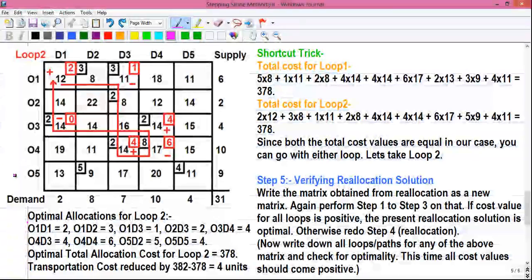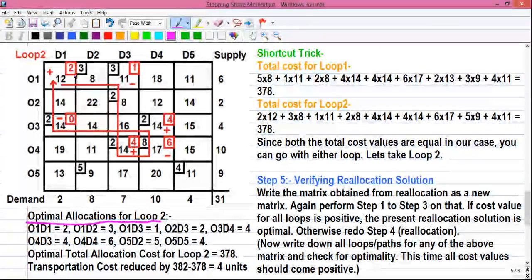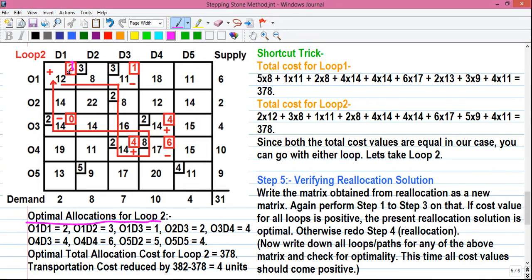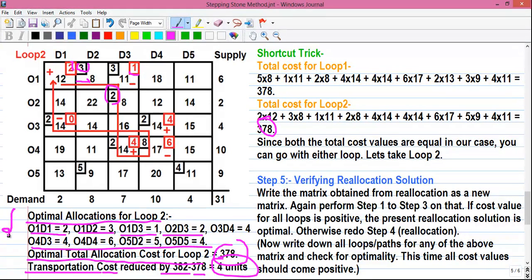And finally our last calculation, calculating the optimal allocations for loop 2. Optimal allocations are nothing but the allocations. For O1D1 the allocation value is 2. Similarly for O1D2 the allocation value is 3. For O1D3 the allocation value is 1. For O2D3 the allocation value is 2, and so on. So write down all the allocation values. And calculating the optimal total allocation cost for loop 2, which is 378, which we already calculated. So the transportation cost is reduced by 382 earlier solution minus 378 after stepping stone 4 units. This is the summary of the solution.